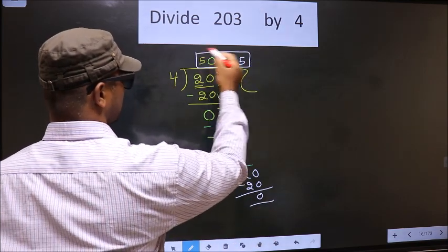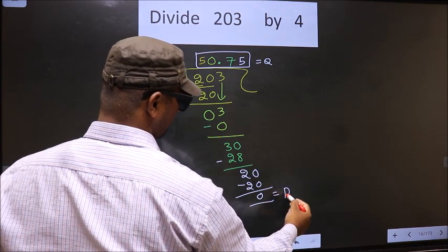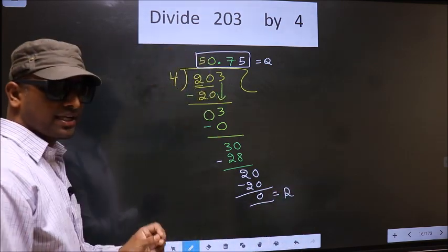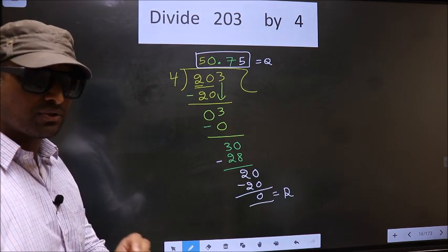So, this is our quotient. And this is our remainder. Did you understand where mistake happens? You should not do that mistake.